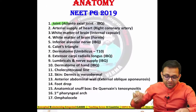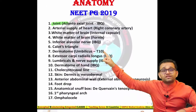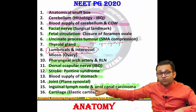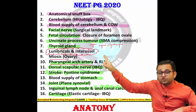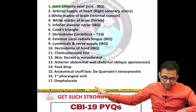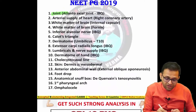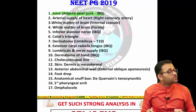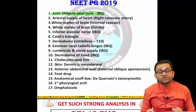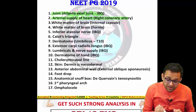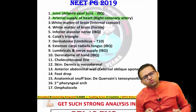The joint topic has been a direct question in NEET PG 2019 as well as 2020. In NEET PG 2020 they asked about plain synovial joints, but here they ask about the atlanto-axial joint, which is responsible for rotation — known as the 'no' movement. Similarly, arterial supply of the heart is always examined.